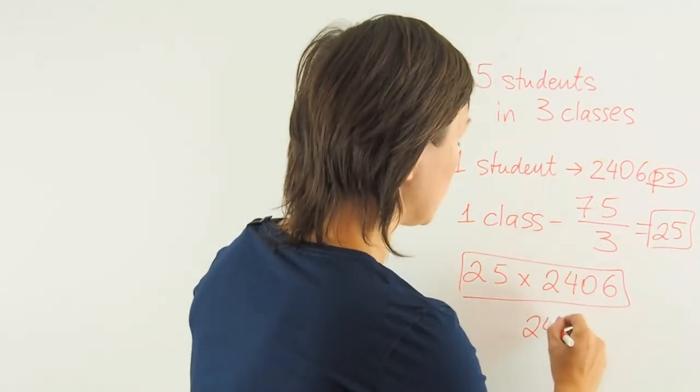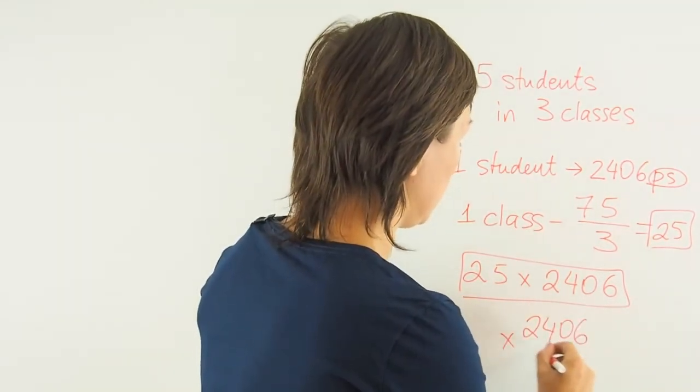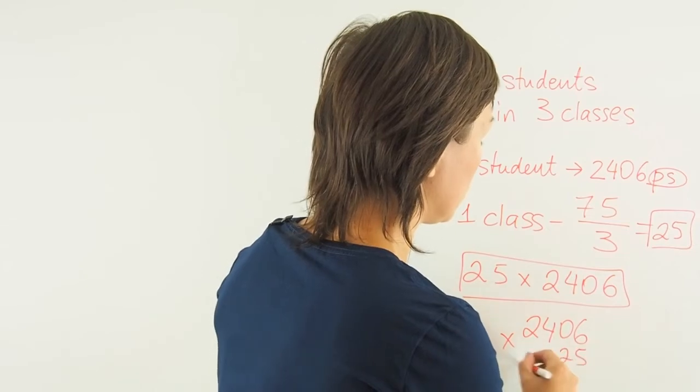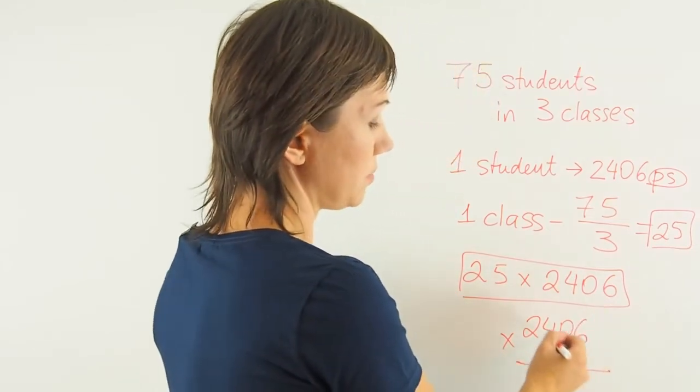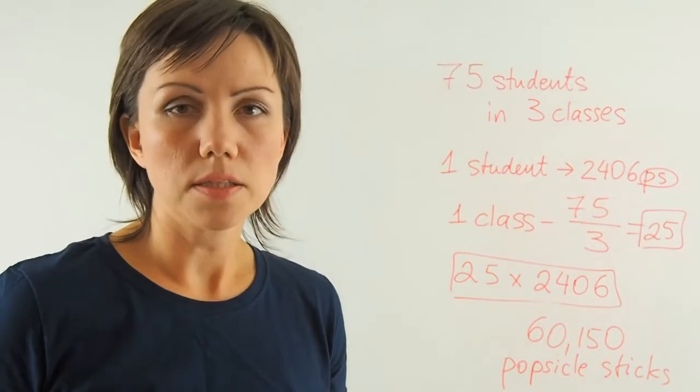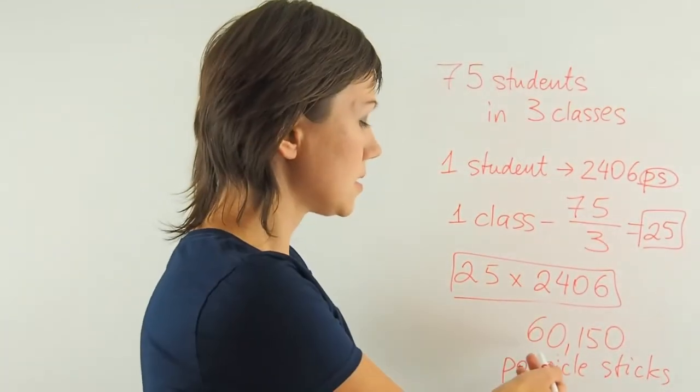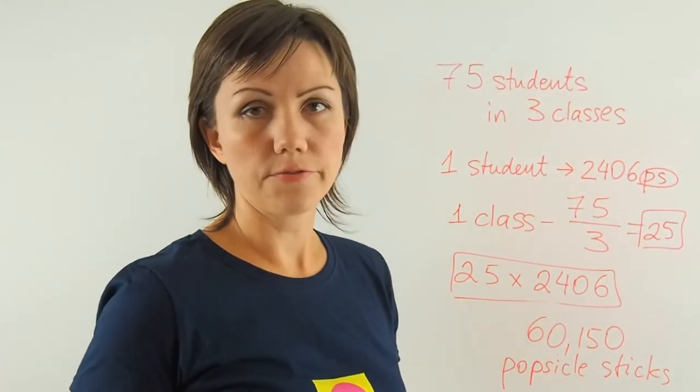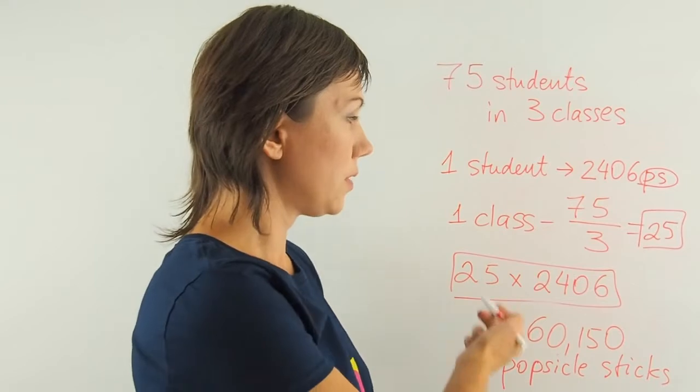So if I wanted to do this vertically it would look like this and then I would multiply in order considering the place value. So once you multiply you will get 60,150 popsicle sticks per one class.